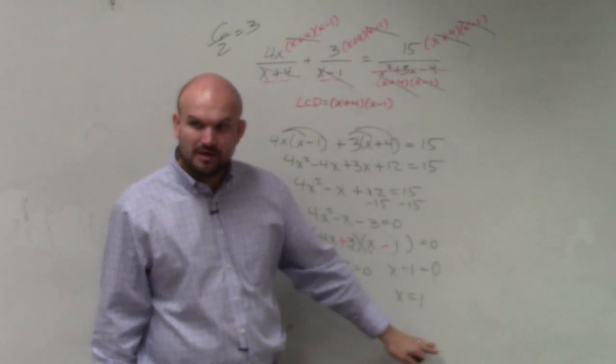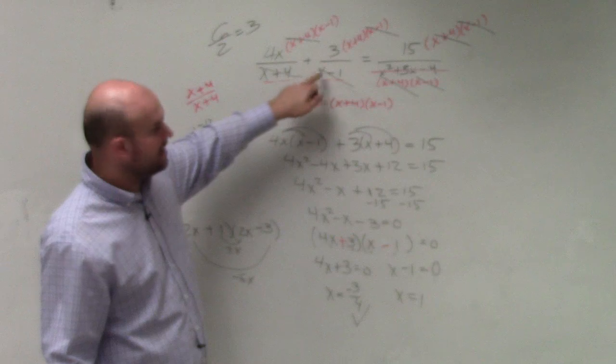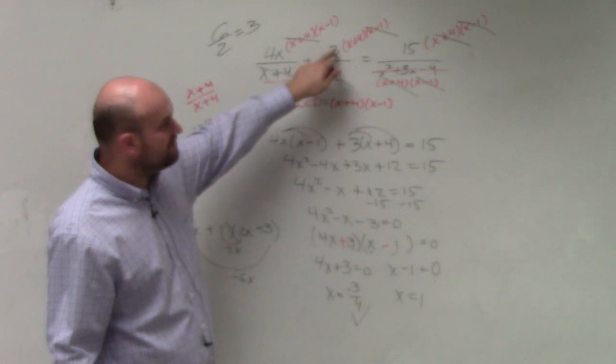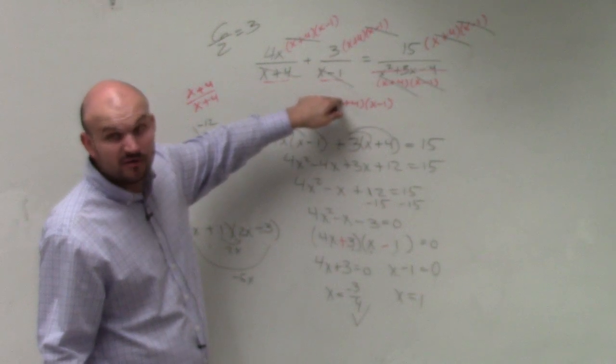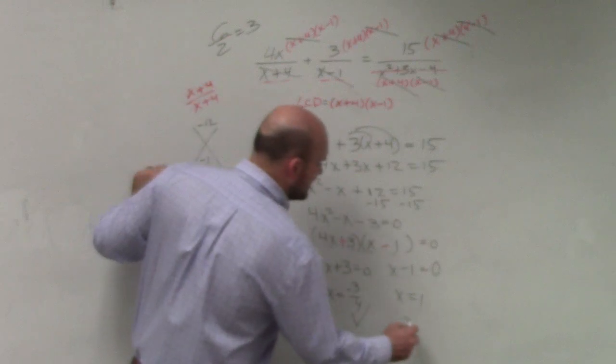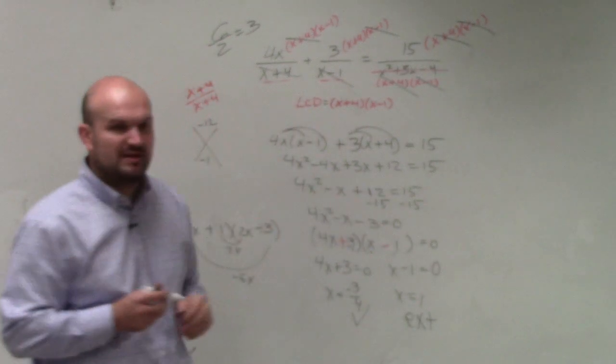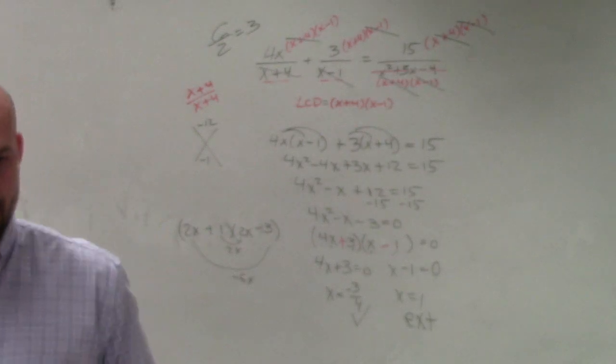But what about if you plug in 1? If I plug in 1 right here, I get 1 minus 1, which is 0. Can you divide 3 divided by 0? No, right? So, this is what we call an extraneous solution. You can just abbreviate it with ext. But you will need to know where...